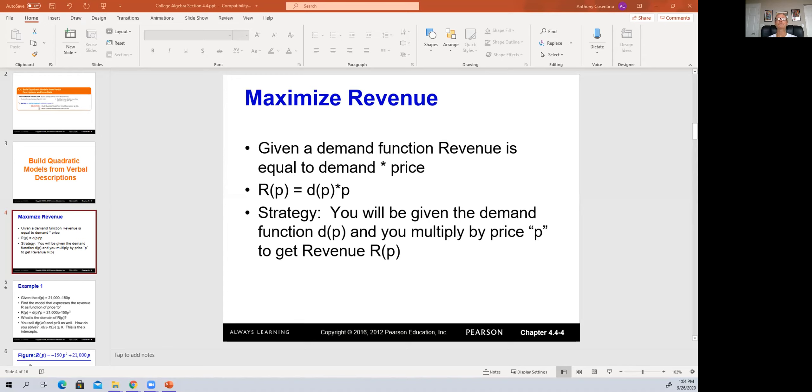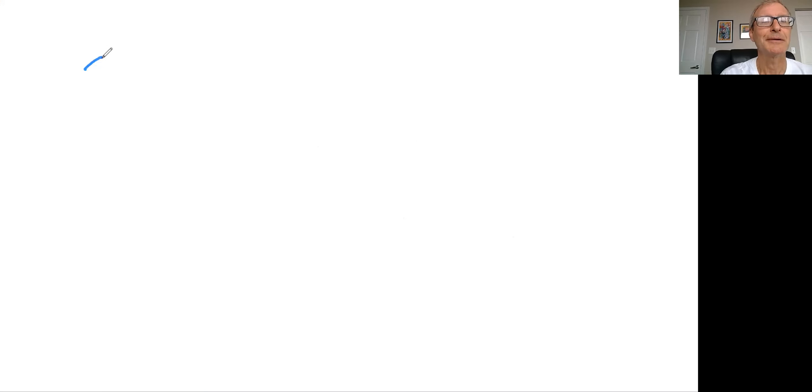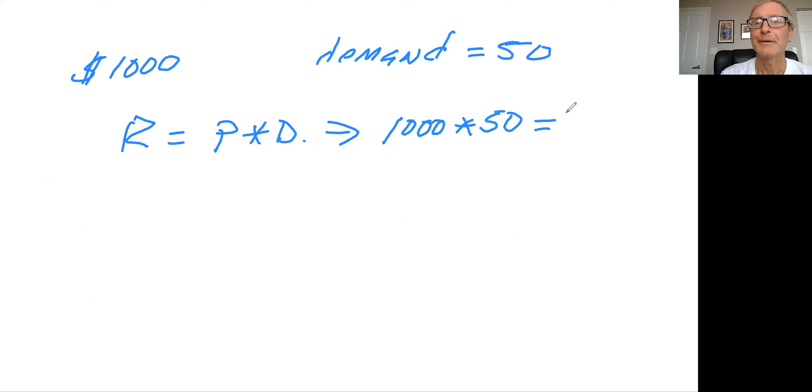Well, it's the demand or the number of units that you would sell times the price. You know, for example, instead of using equations, let's just use numbers, a couple of them. So say like you run an Apple store, and the iPhone costs $1,000. And right now we have a demand for 50 iPhones. So what would be the revenue? It would be the price times the demand.